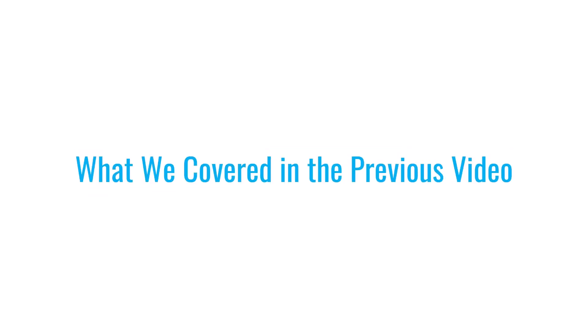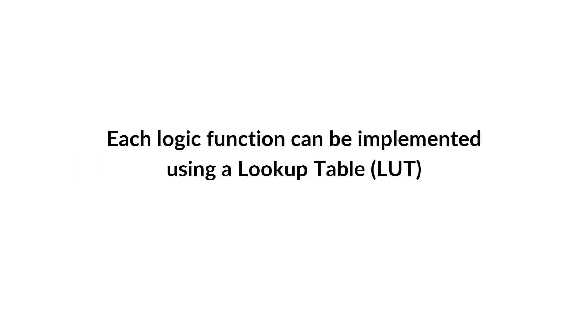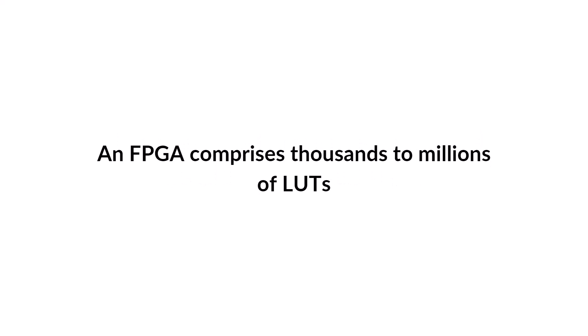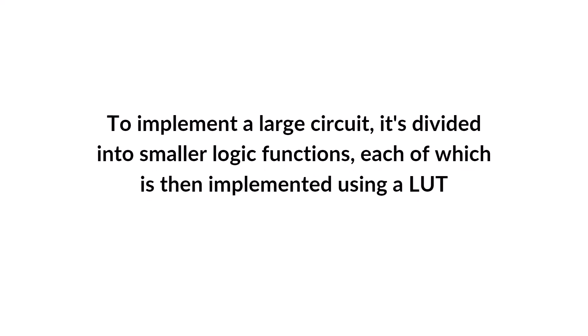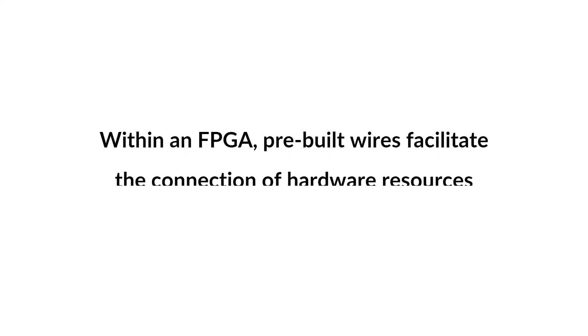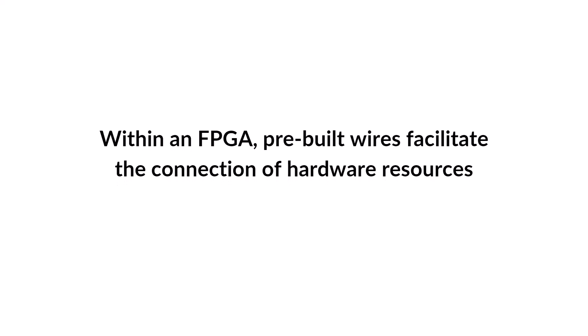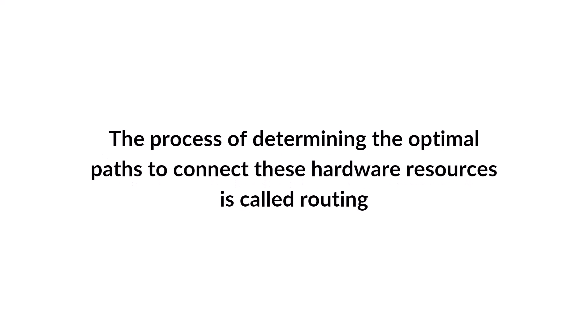In the previous part, we learned that we can implement any logic function using something called a lookup table, or LUT. FPGAs are made of thousands to millions of these lookup tables, and they allow us to create more complex circuits. To implement larger circuits, we break them down into smaller functions, each of which can be implemented using a single lookup table. Now we need to connect these lookup tables to build the main circuit. There are already many wires in place that can be programmed to connect the lookup tables properly, and this process of connecting them is known as routing.